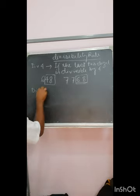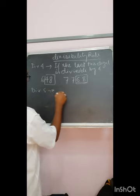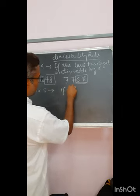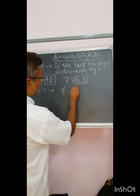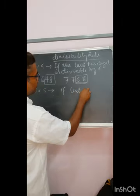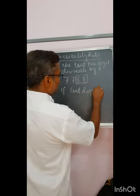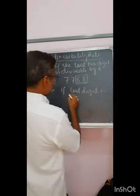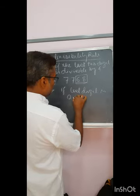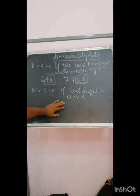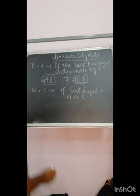Next comes divisibility by five. It is very easy — if the last digit is zero or five, then only the number is divisible by five.